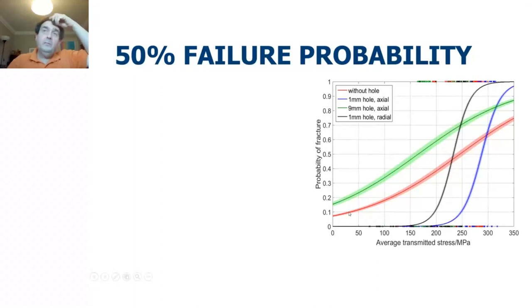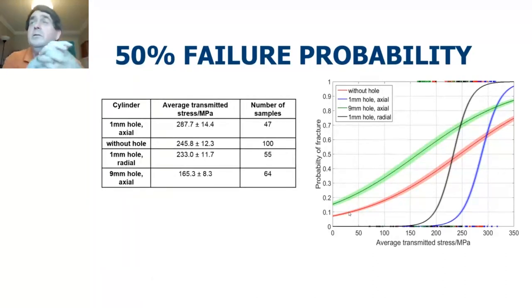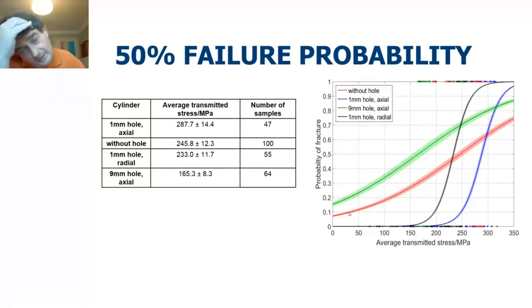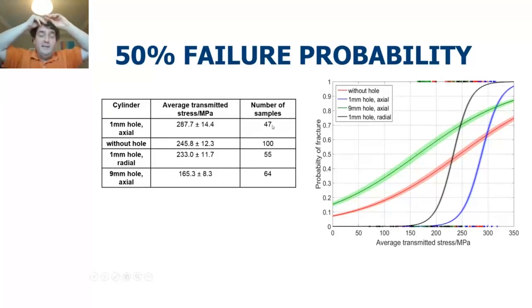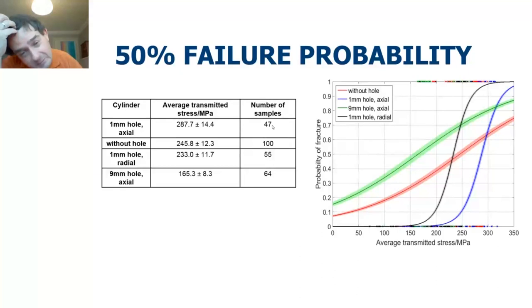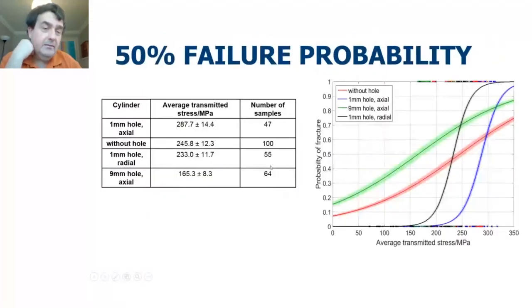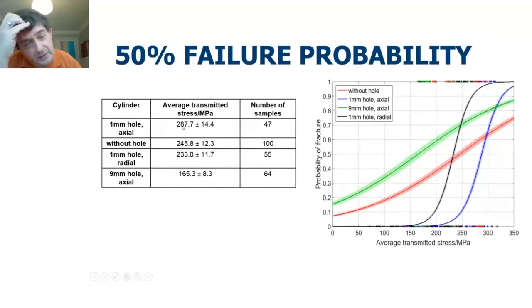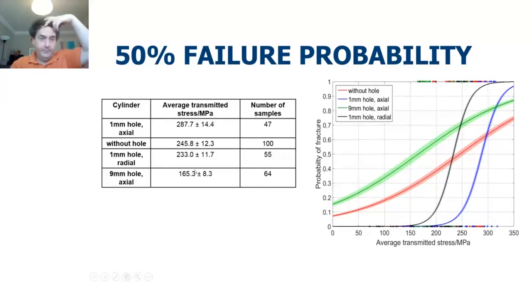Because we're doing failure probability, and because the books tell us there's a distribution of flaws in the sample, we did quite a number of experiments — over 200 — and these are the results. We were looking for 50% failure probability. The average transmitted stresses came out as approximately 290, 250, 230, and 165 MPa for the different configurations, with a reasonably small degree of error.